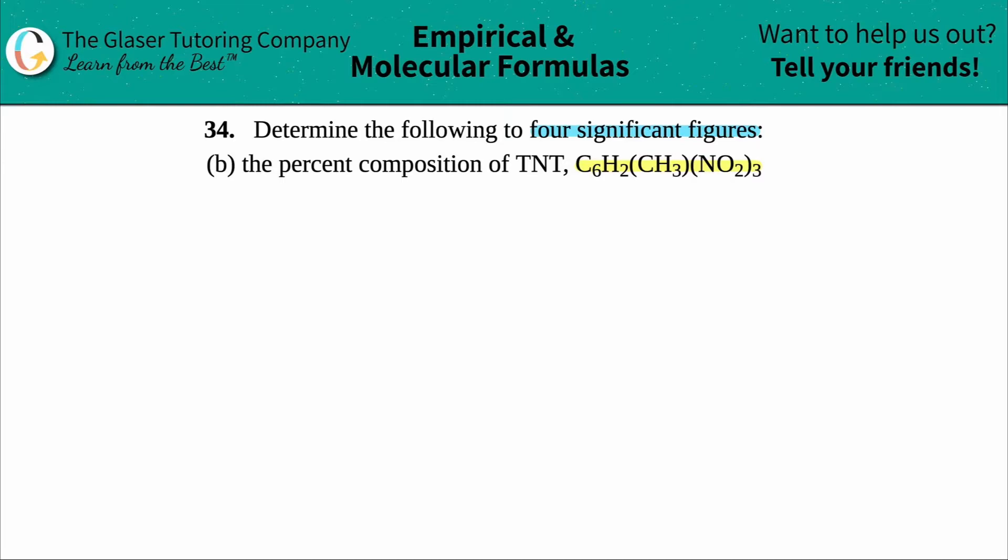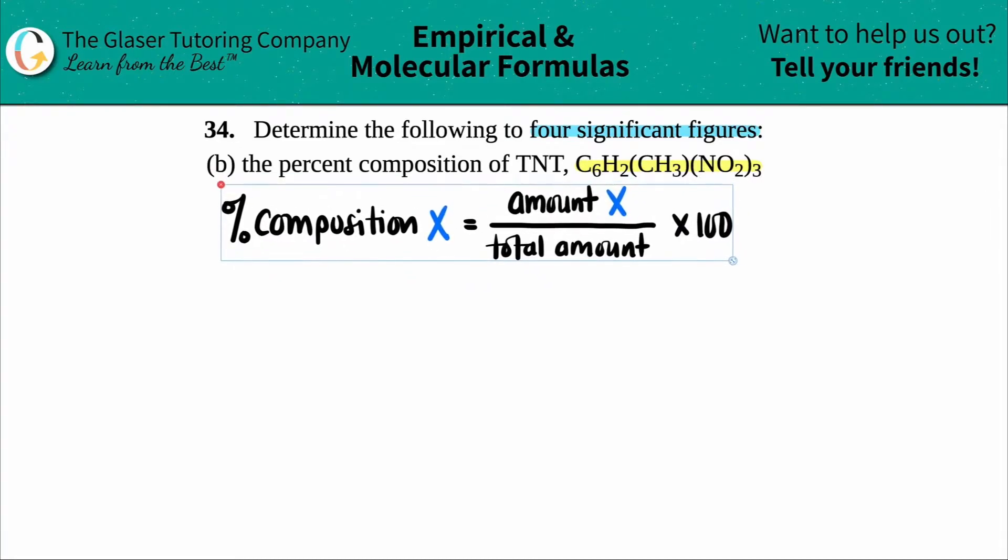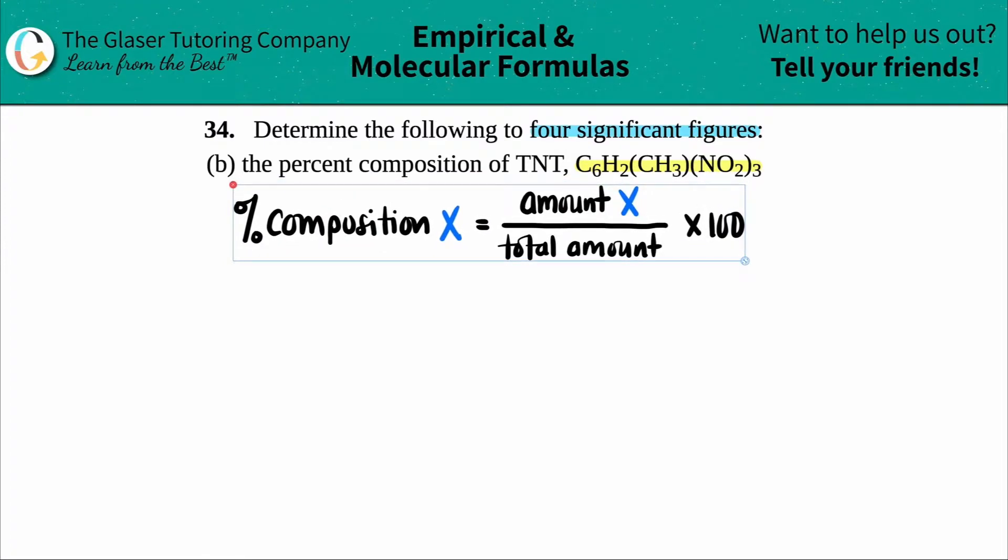Now remember, a percent in math is just a part divided by a whole times 100. The same thing for chemistry, just has a little bit more wording. This is the formula for a percent composition. A percent composition of any element or part of a compound is just that amount of that certain element that you want, so this is the part, divided by the total amount, aka the whole, and then we multiply by 100.